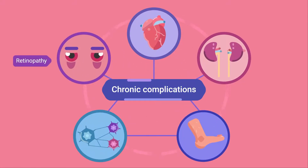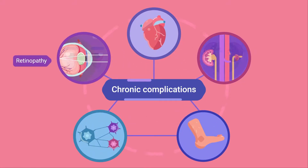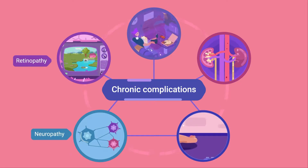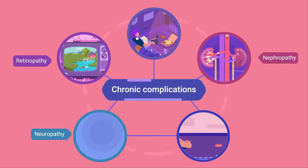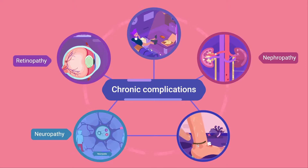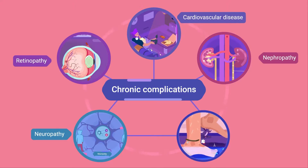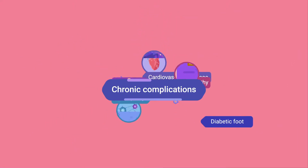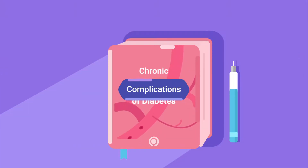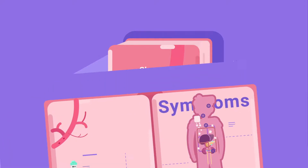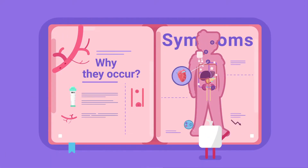The main chronic complications of diabetes are retinopathy, neuropathy, nephropathy, cardiovascular disease, and diabetic foot. In this video you will learn why they occur and what their symptoms are.